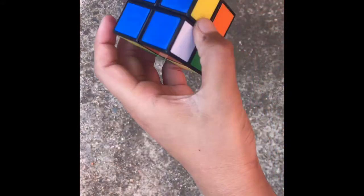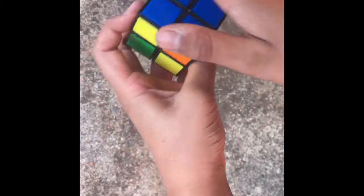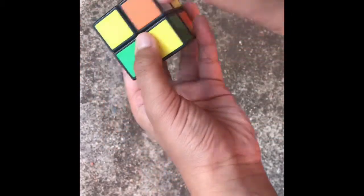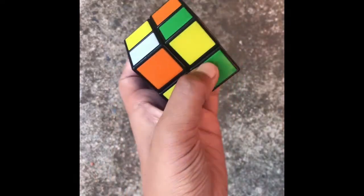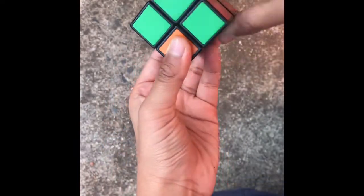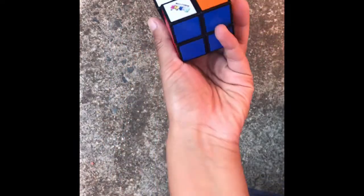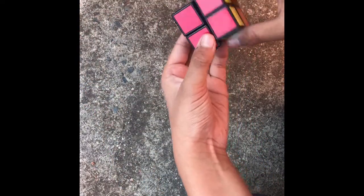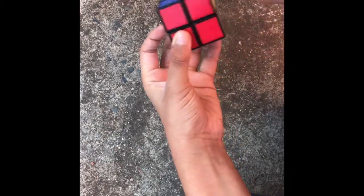The first one's called Ortega, this is the one I use. Basically, you first start off by making a side. It doesn't have to be a layer, just a side of one color. In this case I'm doing blue. These corners don't have to match, that's what makes it a side. Then you turn around and you solve the opposite side, which is OLL. And then you do one more algorithm to permute both layers, or PBL. And that's Ortega.